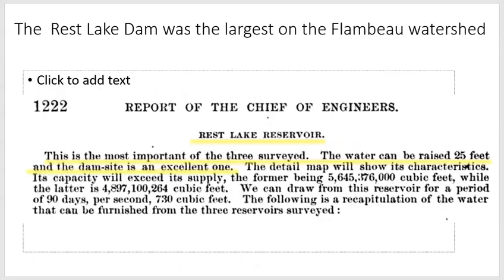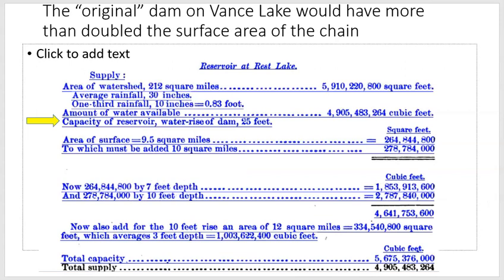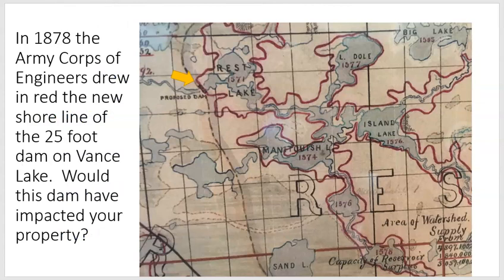Preference for the Rust Lake Reservoir continued in the Congressional Record as more and more data came forward showing the possibility of creating a massive flowage. The data tables showed that the water rise could go as high as 25 feet — quite a bit higher than the 8 feet that the dam is raised today. The Army Corps of Engineers actually drew a map showing what a 25-foot head of water would look like on the Manitowish Chain. We're lucky as residents of this area to have this kind of detailed information from the 19th century.